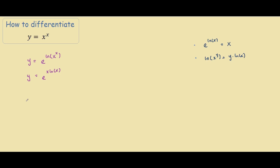All we did was bring the x out to the front. So now we can find dy dx. This is where we will be using the chain rule and product rule at the same time. For those unfamiliar with finding the derivative of e to the x, if you have e to some function x, the derivative is the derivative of the function times e to the function again.